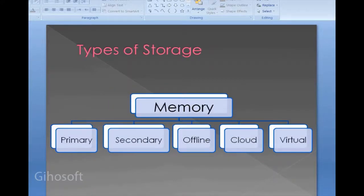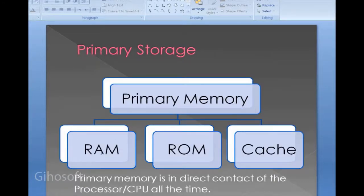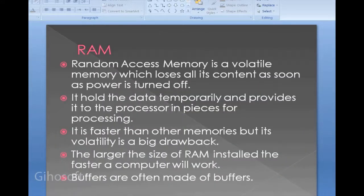The first type of primary memory is RAM — Random Access Memory. It is a volatile or temporary memory, which means it loses all its content as soon as the power is turned off. If you are working on an unsaved file and your PC shuts down, you lose that file.